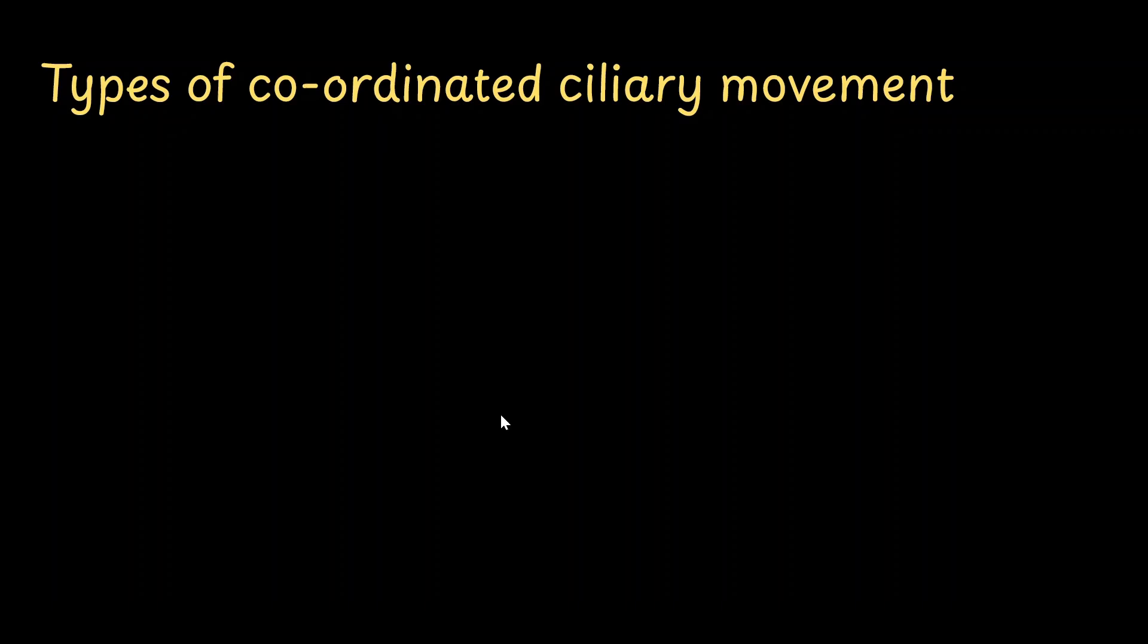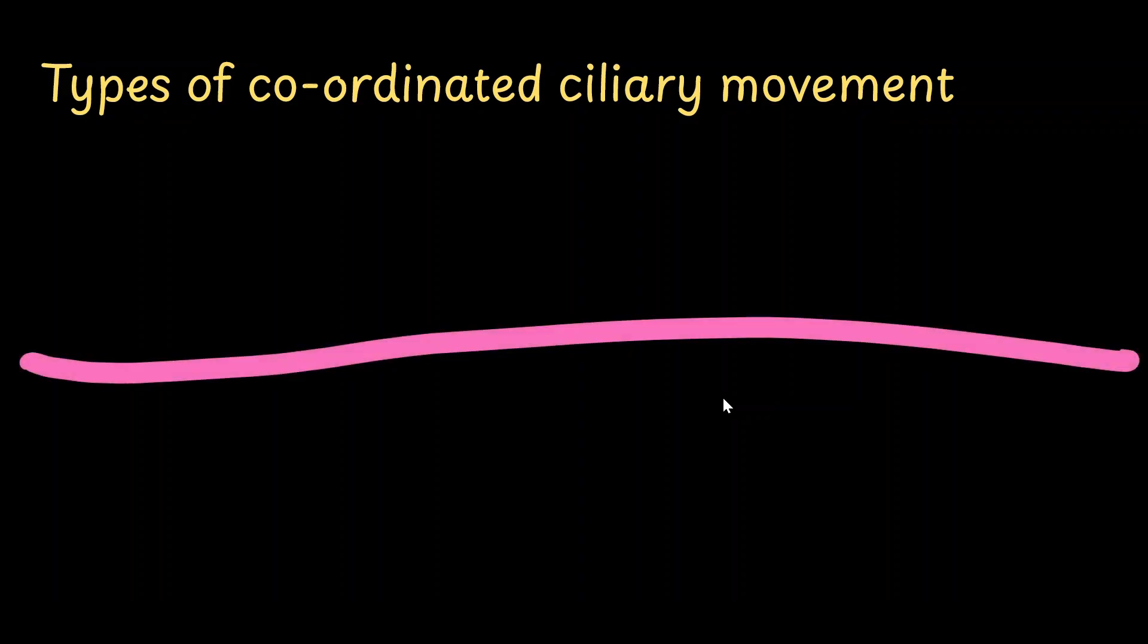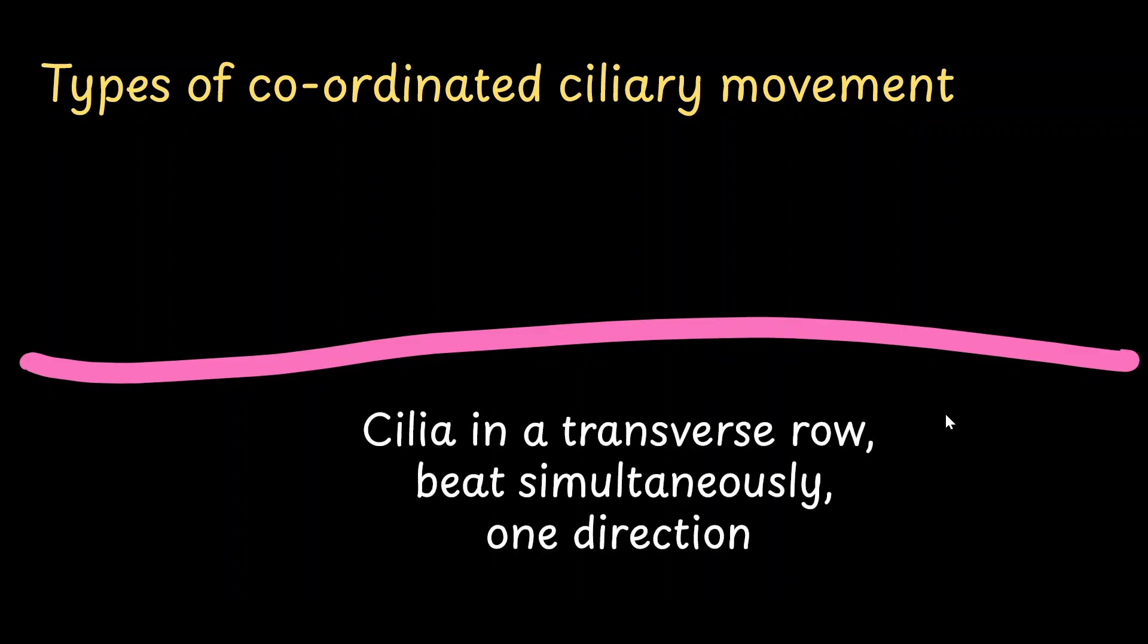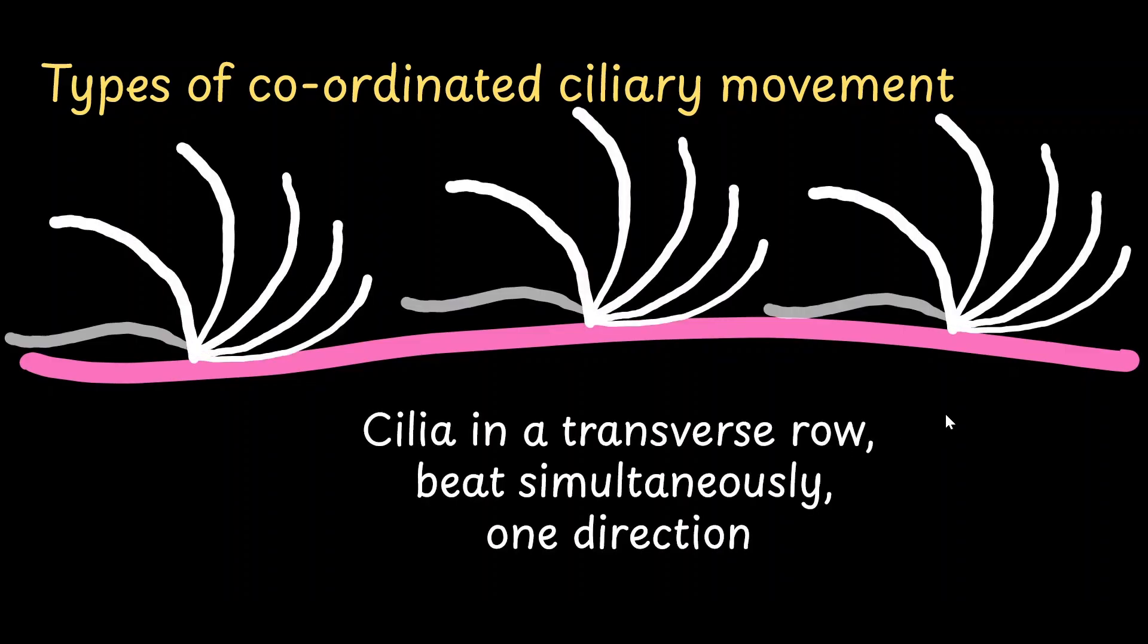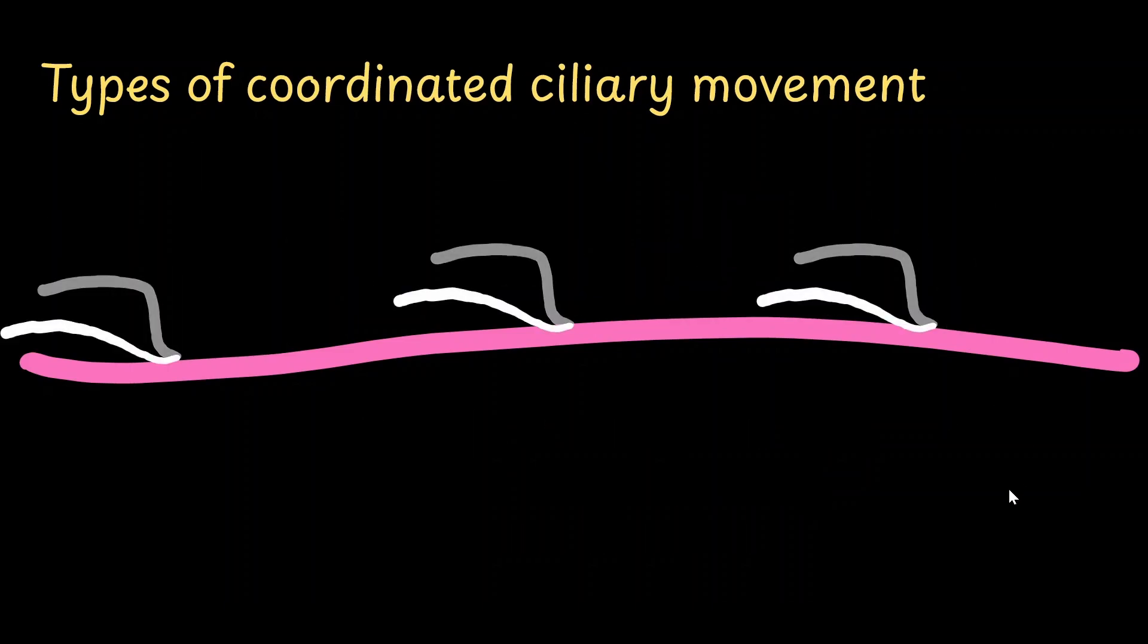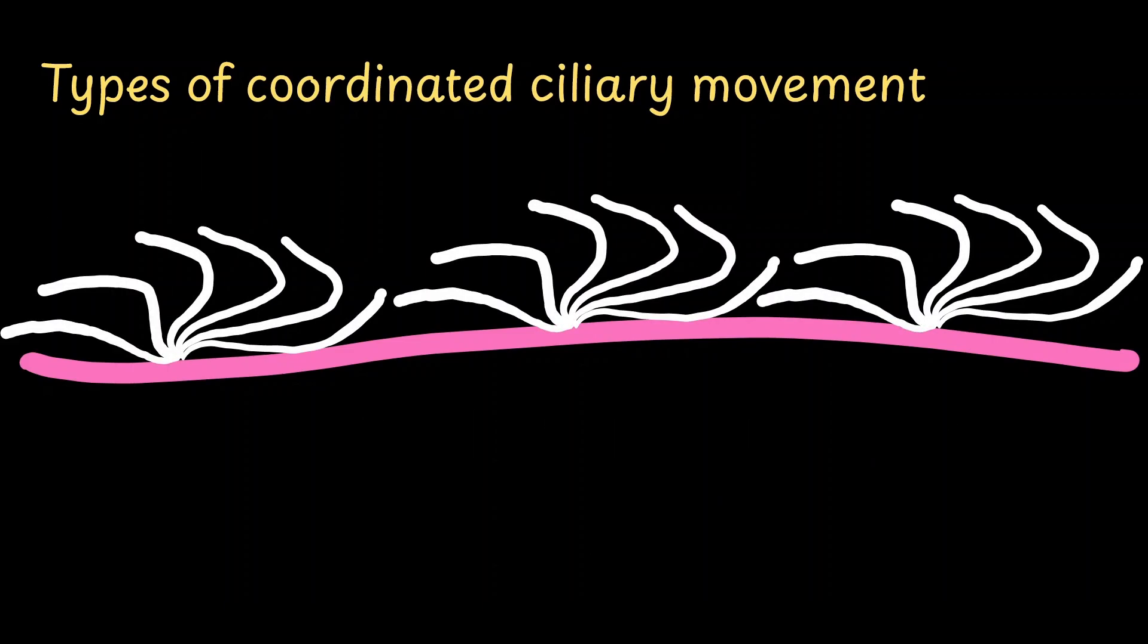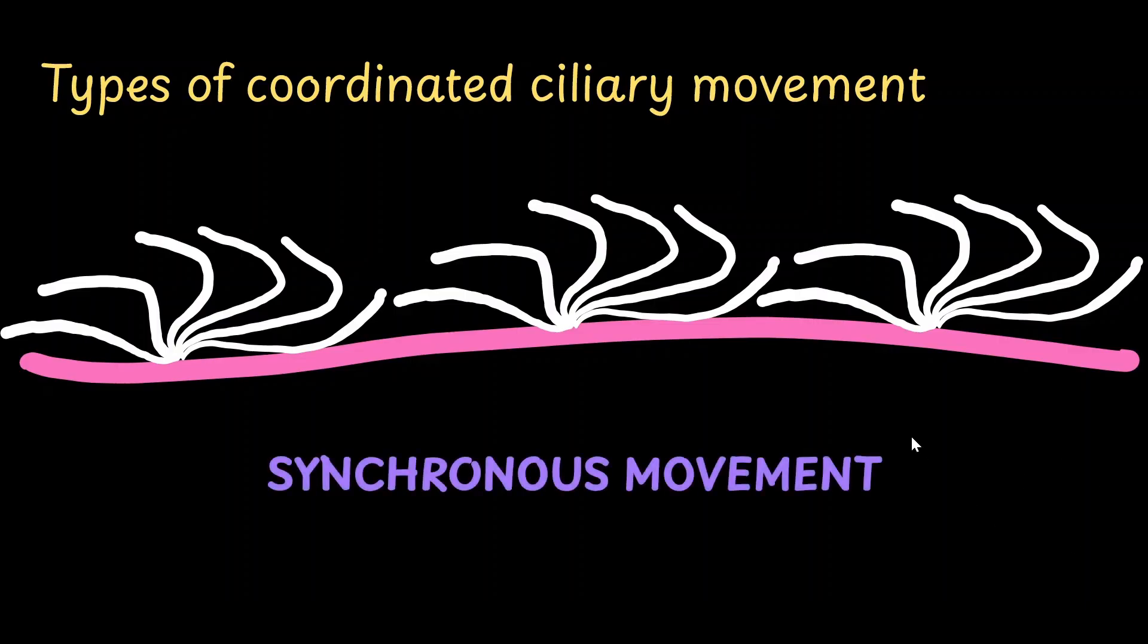In the first type, the cilia is in a transverse row and all of them beat simultaneously and they are going towards the same direction as well. You can see that all of the cilia at a given point of time are in the same position. This sort of movement is called the synchronous movement.